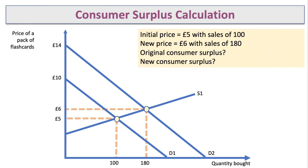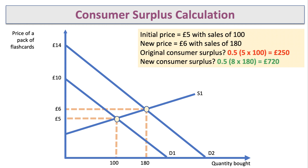You may be asked to calculate consumer surplus. At a price of five pounds selling 100 units, the original consumer surplus was 250 pounds. At a price of six pounds selling 180 units, with a maximum willingness to pay of 14 pounds, the new consumer surplus is: 8 × 180 × 0.5 = 720 pounds. So an increase in demand increases the level of consumer surplus.